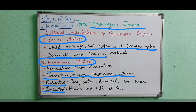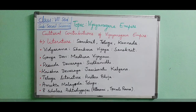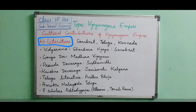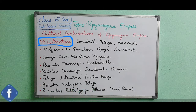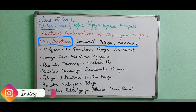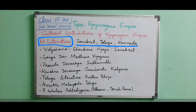Now next we will see literature. Literature means writing which consists of novels, poetry, and plays. The Vijayanagara kings and people supported three languages: Sanskrit, Telugu, and Kannada. These three languages developed immensely. Vidyaranya wrote books like Shankara Vijaya and Sarva Darsana Sangraha in Sanskrit.